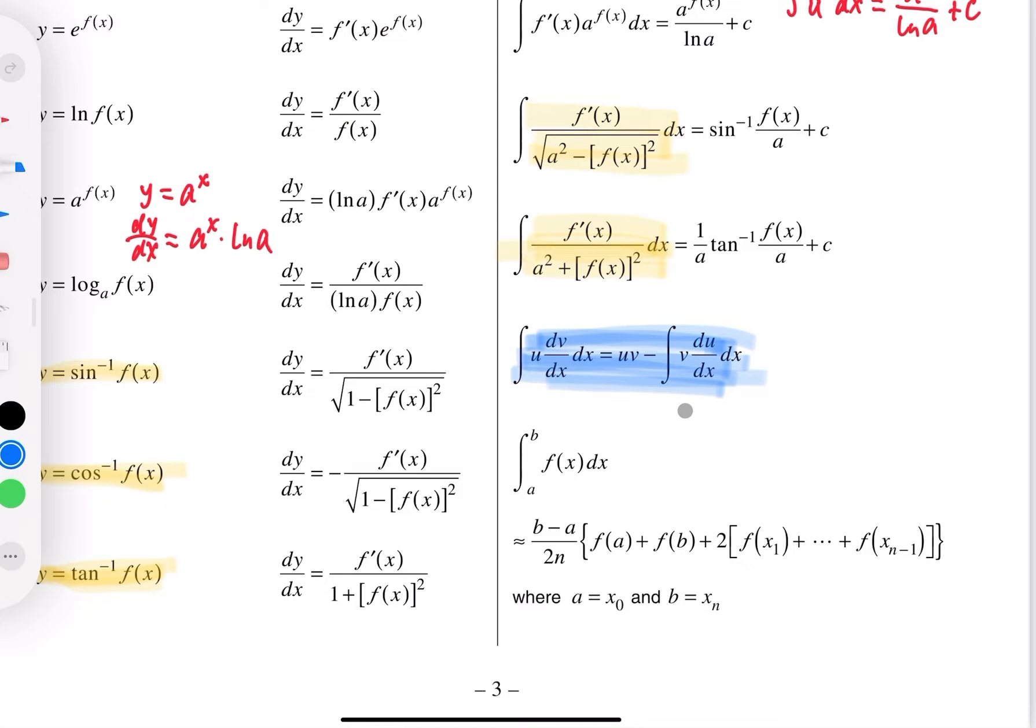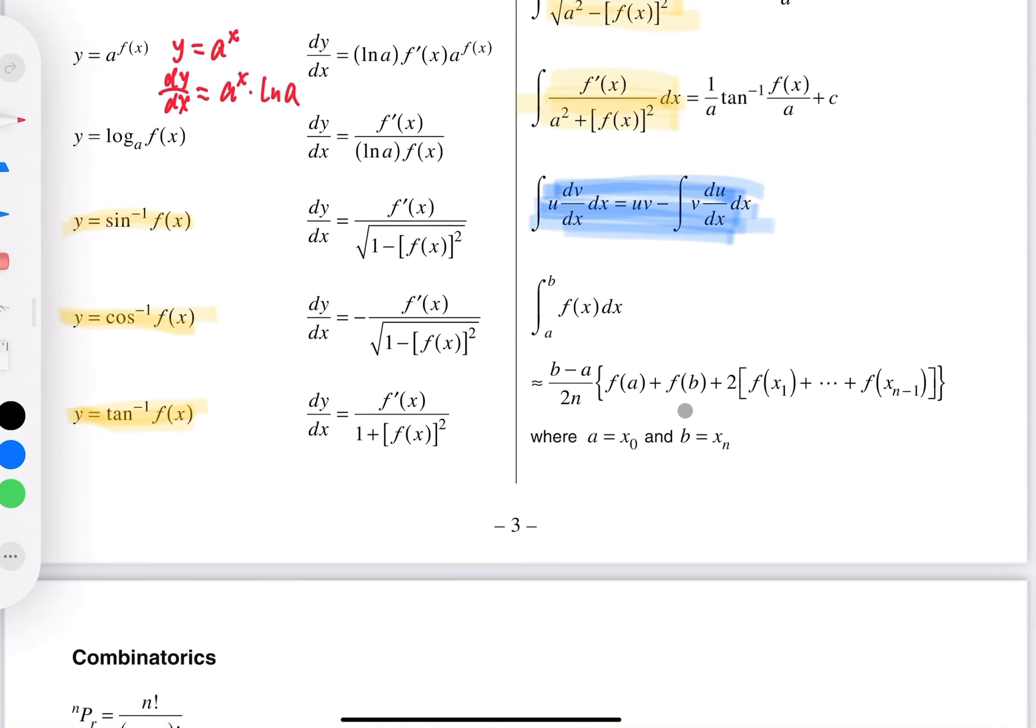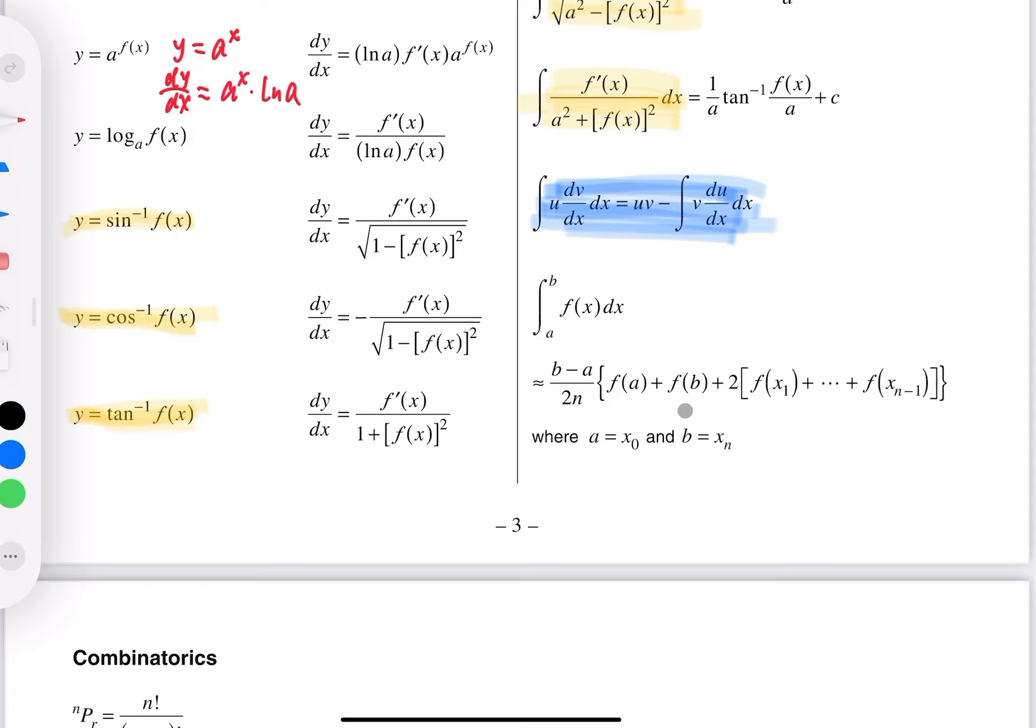And the last one is advanced. So in that one, this is called the trapezoidal rule. It's approximation values of definite integral. If the function cannot be integrated, then we can use this formula to find approximation values. Okay, so the most confusing part here is students sometimes get confused about what n is.